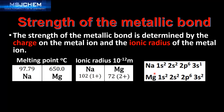If we look at the charge on the ion — here's the electronic configuration of the sodium atom. It can lose its 3s electron to form a 1+ ion. Here's the electronic configuration of magnesium. It can lose these two 3s electrons to form a 2+ ion.